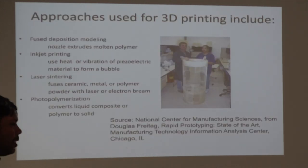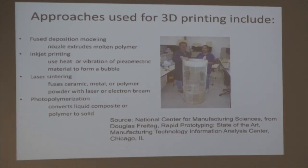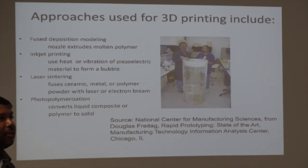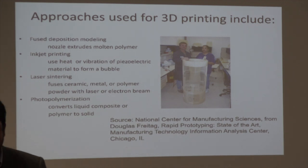3D printing techniques basically involve all methods available for joining together material in a layer-by-layer manner to create a 3D part. You can join together filaments using fused deposition modeling, use inkjet printing, use laser sintering or laser melting to join polymers or metals, or use photopolymerization. I'm going to spend most of the time today talking about the idea of selectively hardening a liquid and using that selective hardening to create a three-dimensional structure.